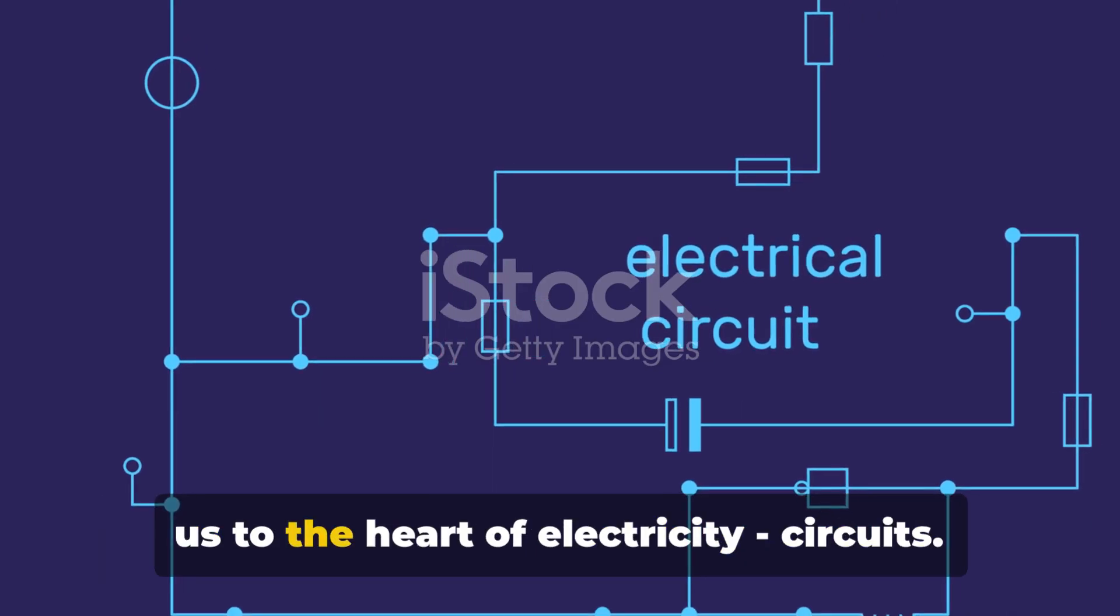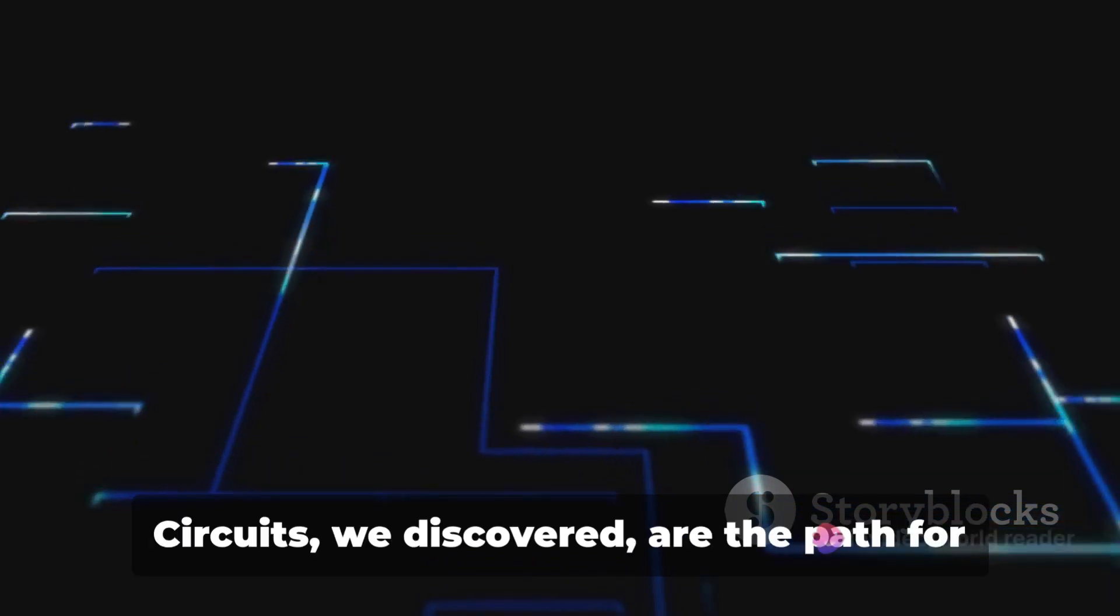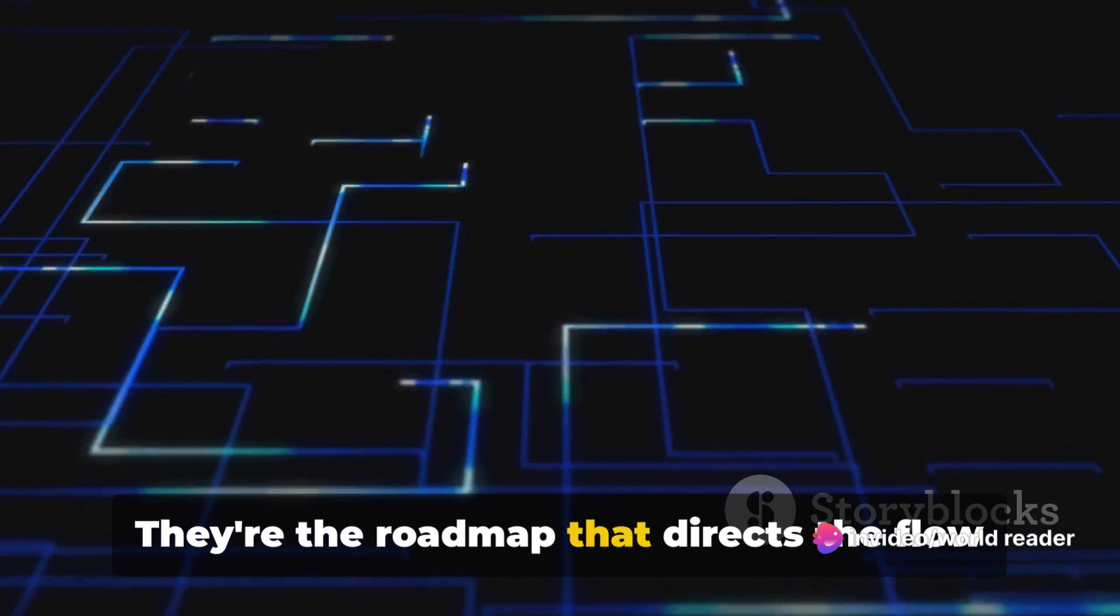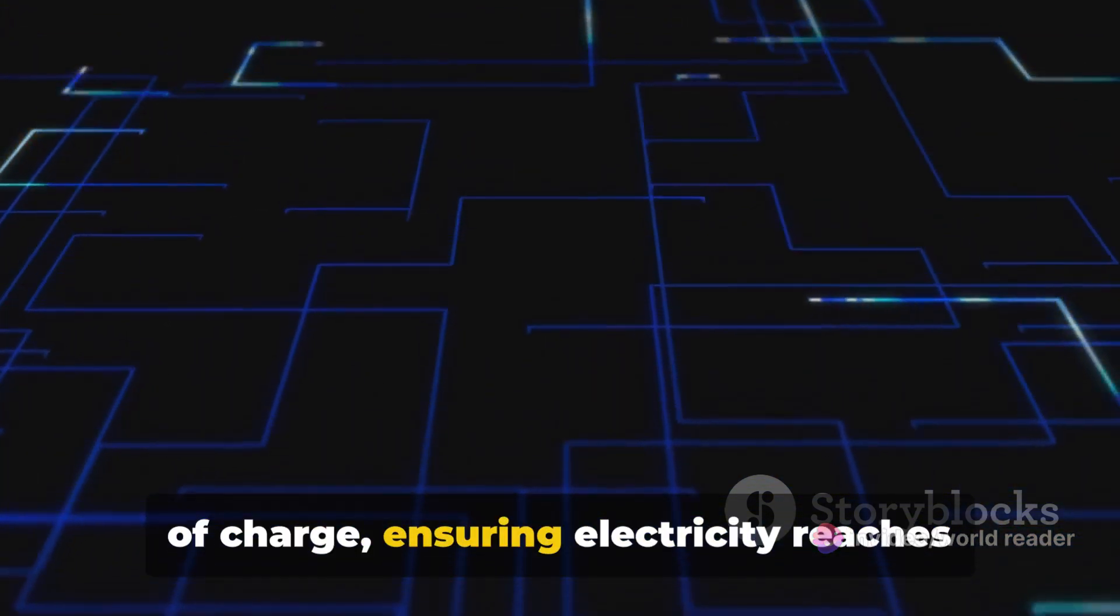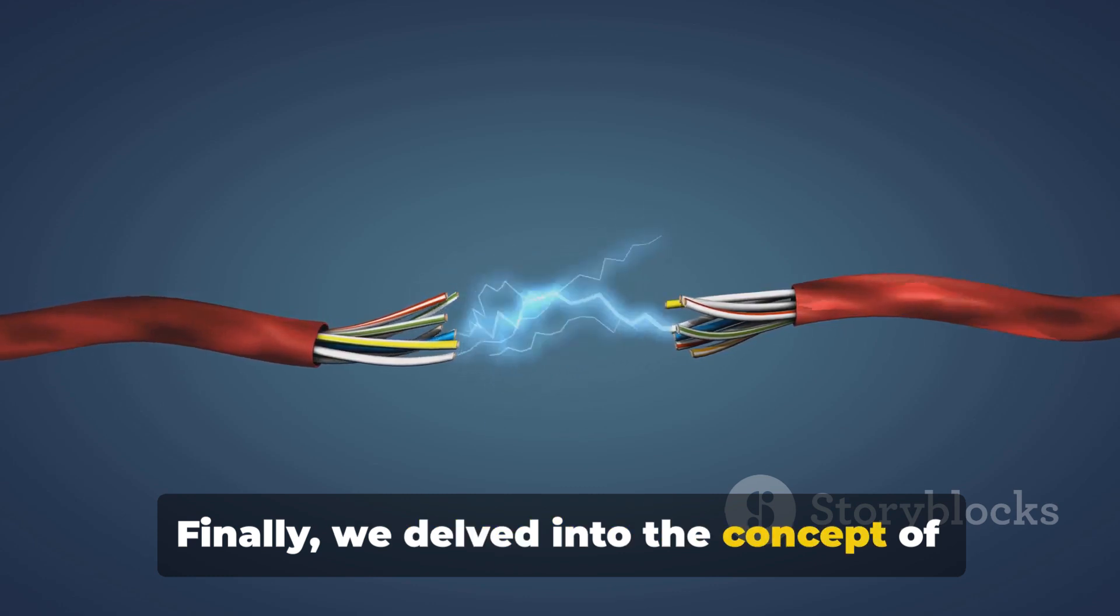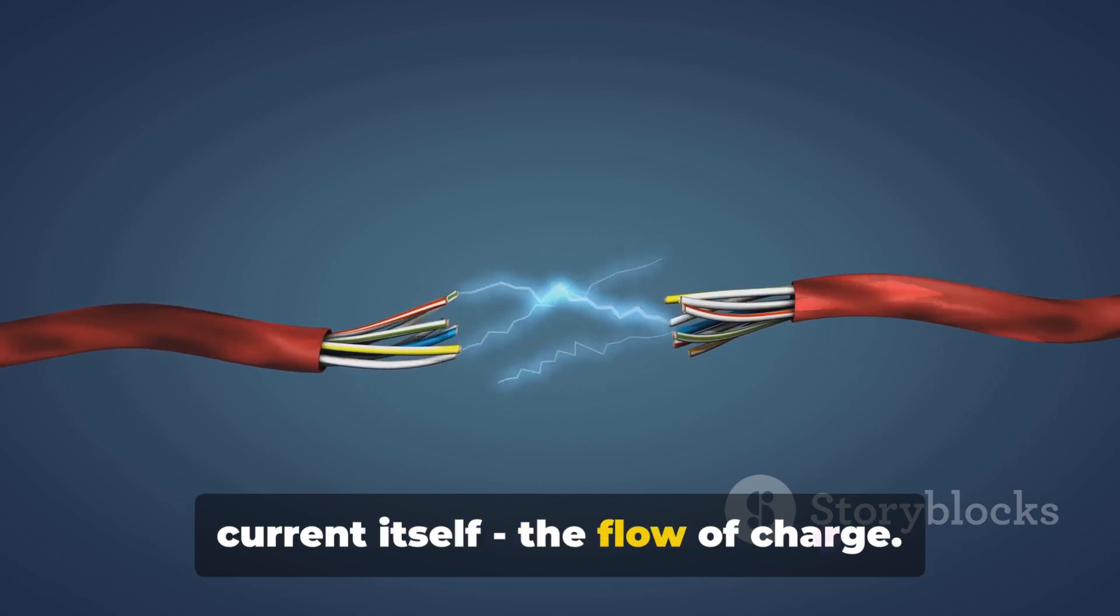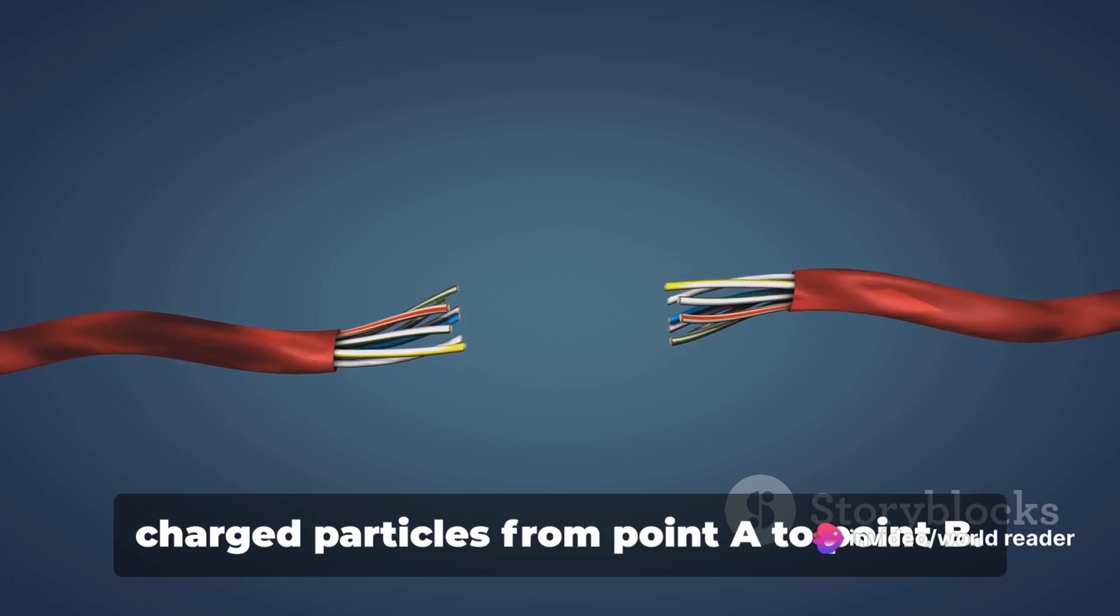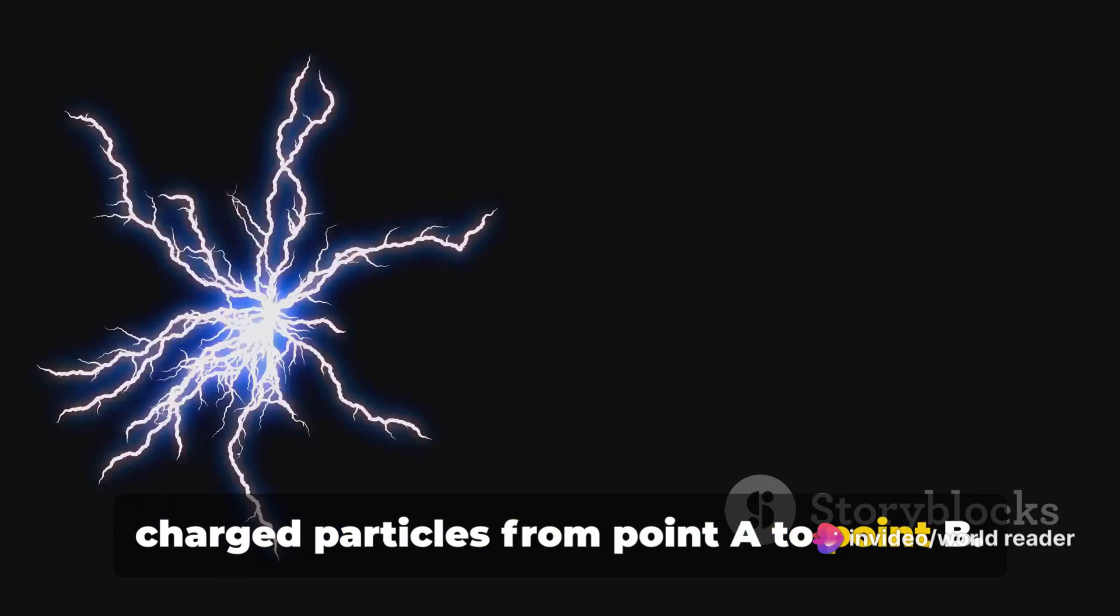Our journey then took us to the heart of electricity: circuits. Circuits, we discovered, are the path for electric current. They're the roadmap that directs the flow of charge ensuring electricity reaches its destination. Finally, we delved into the concept of current itself, the flow of charge. We learned that current is the lifeblood of electricity, the river that carries charged particles from point A to point B.